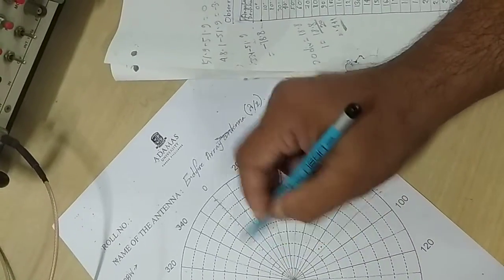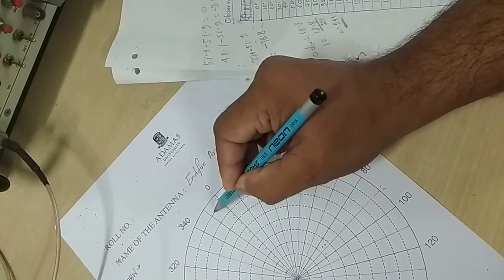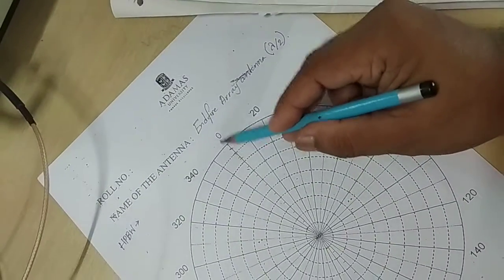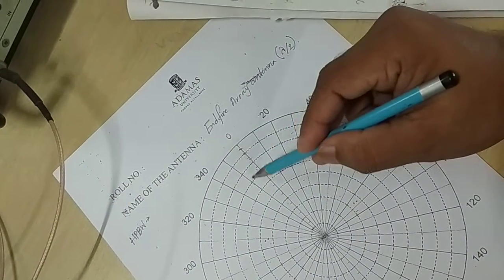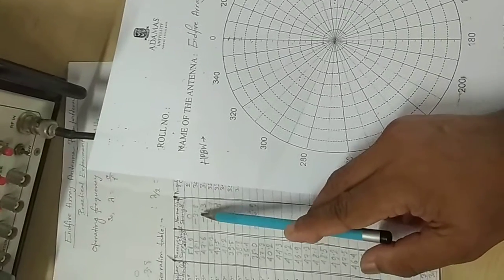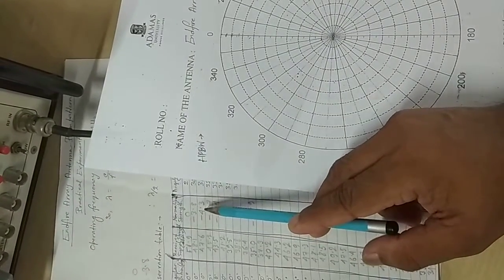We can plot like this. The 0 degree value and the next value is minus 3.8, that means the next value directly comes to this point. Look at this, the 0 degree value will be there, this is minus 3.8 and this is minus 4.3.